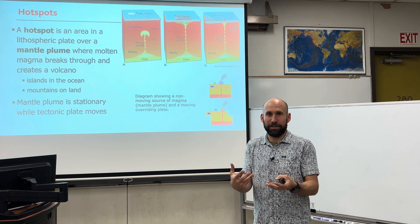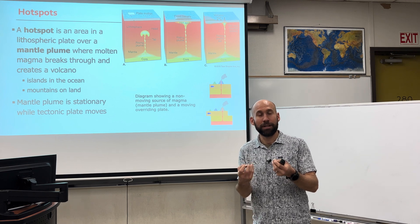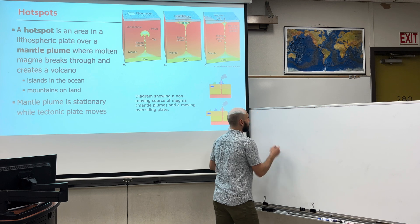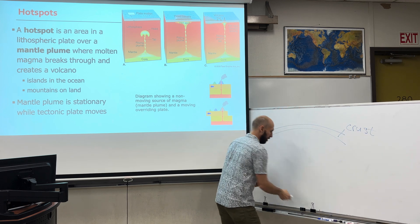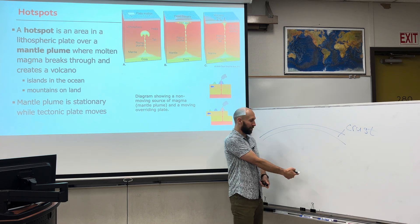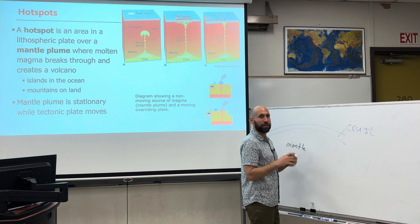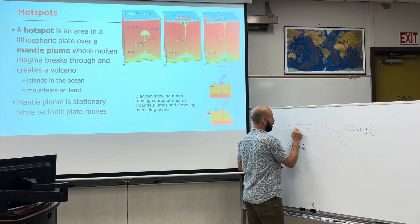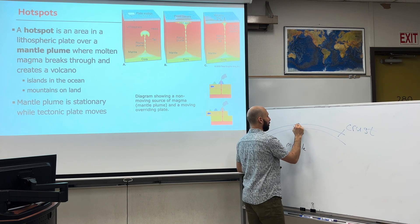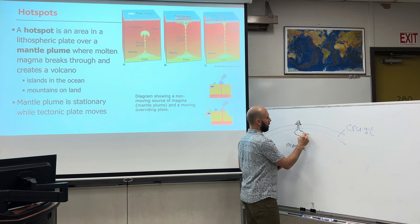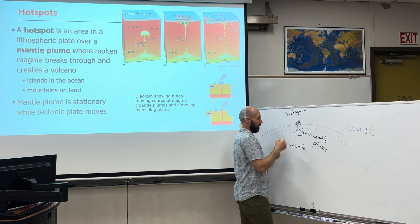A hotspot is an area in Earth's crust that is fed by a mantle plume that is stationary — it does not move. We've got crust, and underneath the crust is the mantle, and underneath the mantle is the core. Within the mantle, the mantle's primary job is to transfer heat that drives the movement of Earth's crust. Certain areas the crust will thin, creating a volcano. This is a mantle plume, and the volcano that is created above the mantle plume is a hotspot.